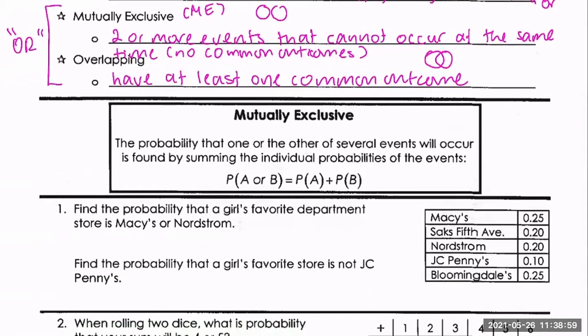In example one you see a survey of girls' favorite department stores. On the right it gives you the probability of each one being selected — surprisingly all of them survived the pandemic and are still open. If you total all of those probability values together, you get one, which is equivalent to 100%.